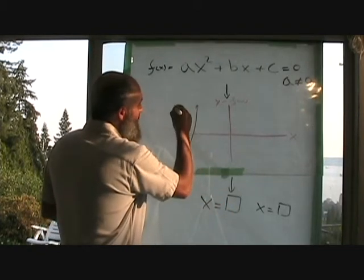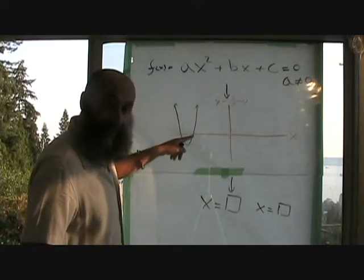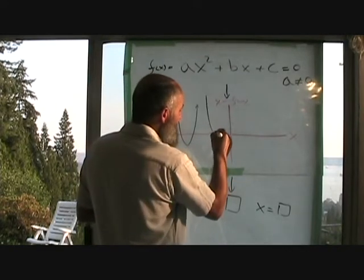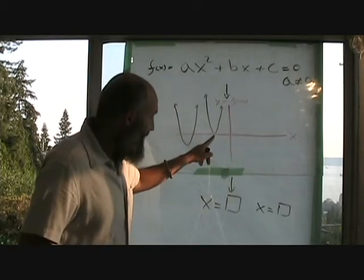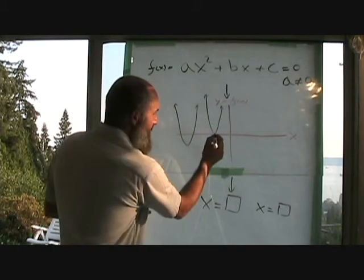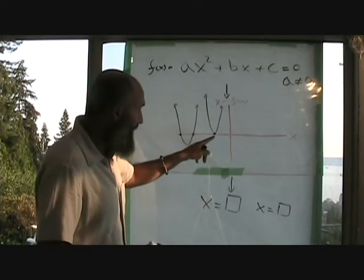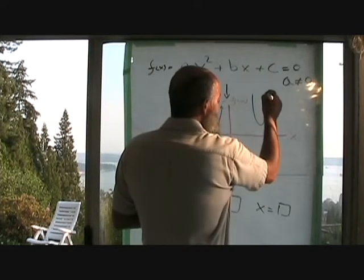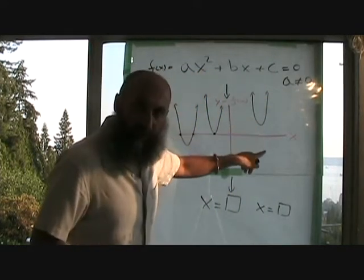You could have a quadratic function crossing the x-axis twice. You could have it only crossing the x-axis once, not crossing it but touching it, so you only have one solution here. You can have two x-intercepts, we could have one x-intercept.